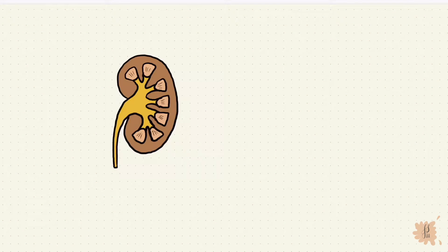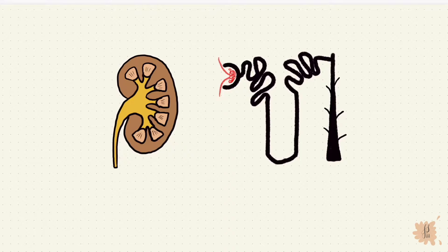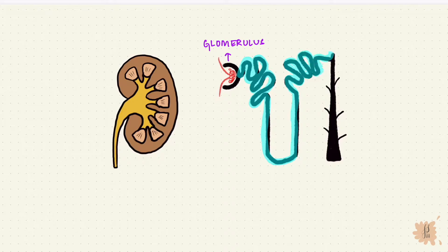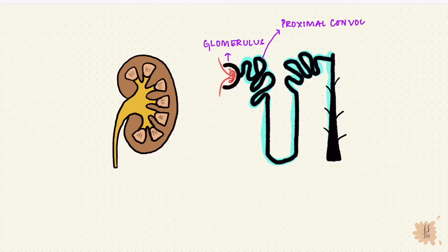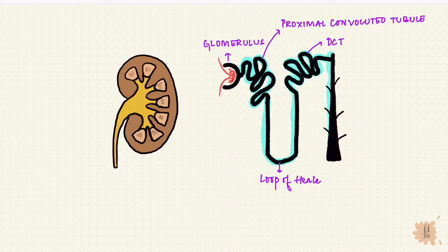The kidney has millions of nephrons and each nephron has a glomerulus and a renal tubule. The first part of the renal tubule is the proximal convoluted tubule, which then leads into the loop of Henle, the distal convoluted tubule, and finally the collecting duct.